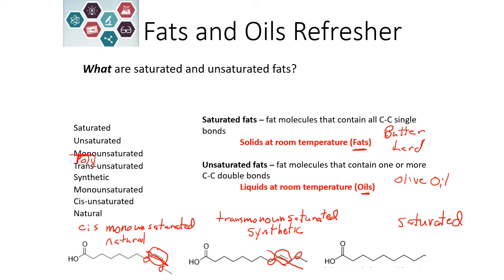This saturated fat would most likely be a solid at room temperature, giving it the highest melting point. The trans fat would come next — that would be our second highest. And the cis would have the lowest melting point because it's harder for those molecules to pack together.